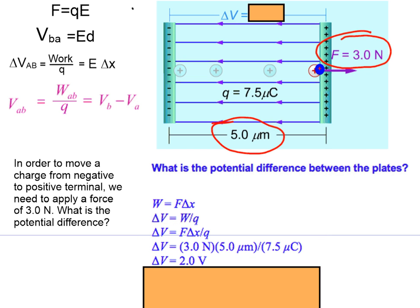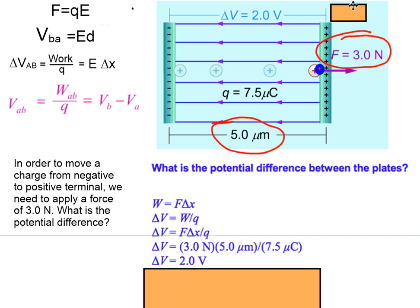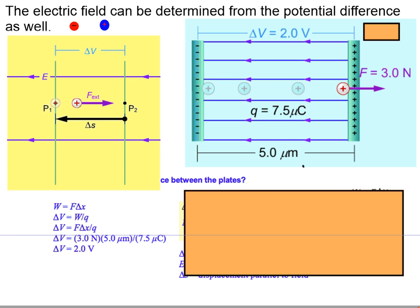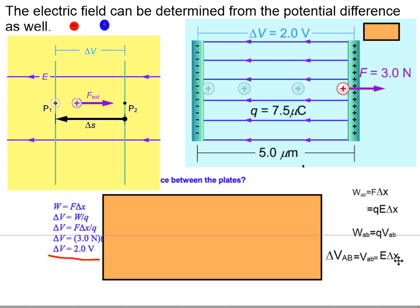If we do the calculation, we find that the potential difference across the plates is equal to two volts. Now to calculate the electric field, we know the potential difference is two volts. We can use the fact that the potential difference across the plates also equals the electric field times the distance between the plates. Alternatively, we can use the original definition that the electric field equals the force on a charge divided by the charge itself.